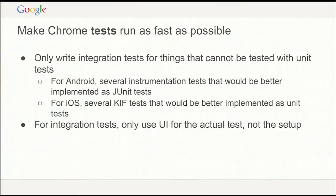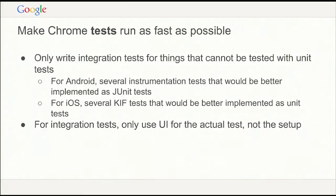So this was about how do we make Chrome fast and how do we make our tests run as fast as possible. Some of these are general things. You should only write integration tests for things you cannot test with unit tests. Unfortunately, that's not the case for us — we move very fast. Chrome on Android shipped about two and a half years ago in beta, and the first public release was the summer two years ago. The mobile tooling isn't as good, so for Android we have several instrumentation tests which tend to be integration tests running on device, when really they should be unit tests.